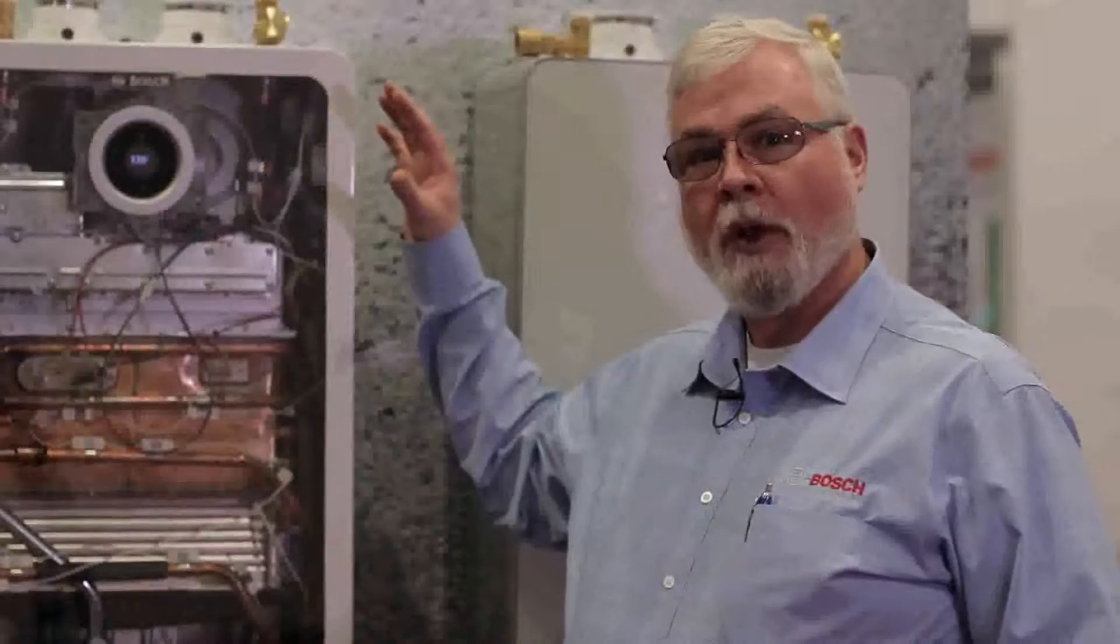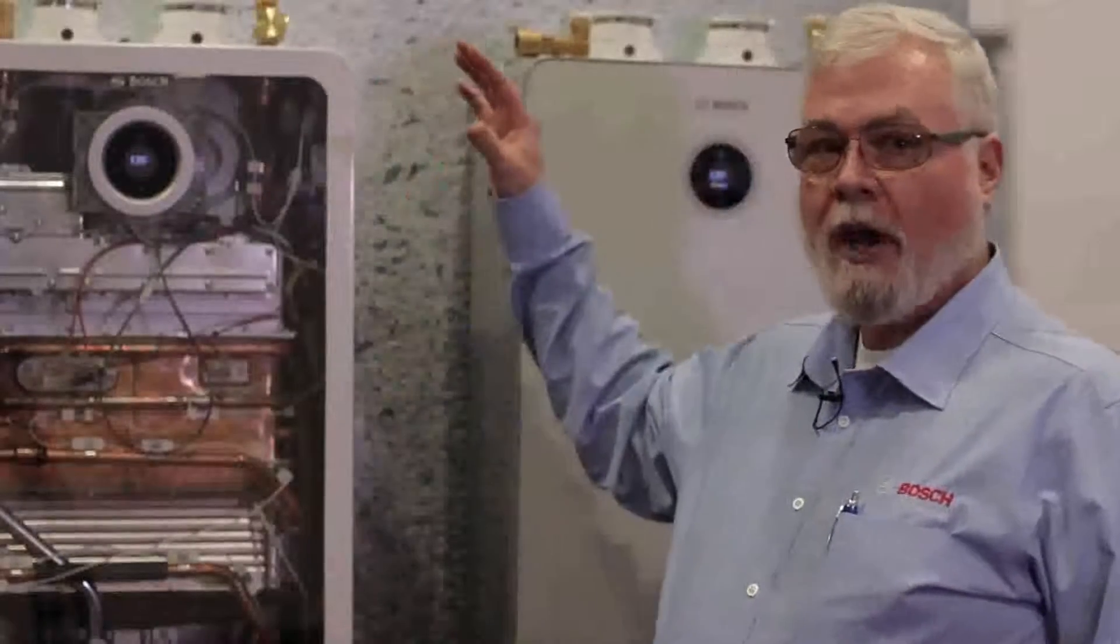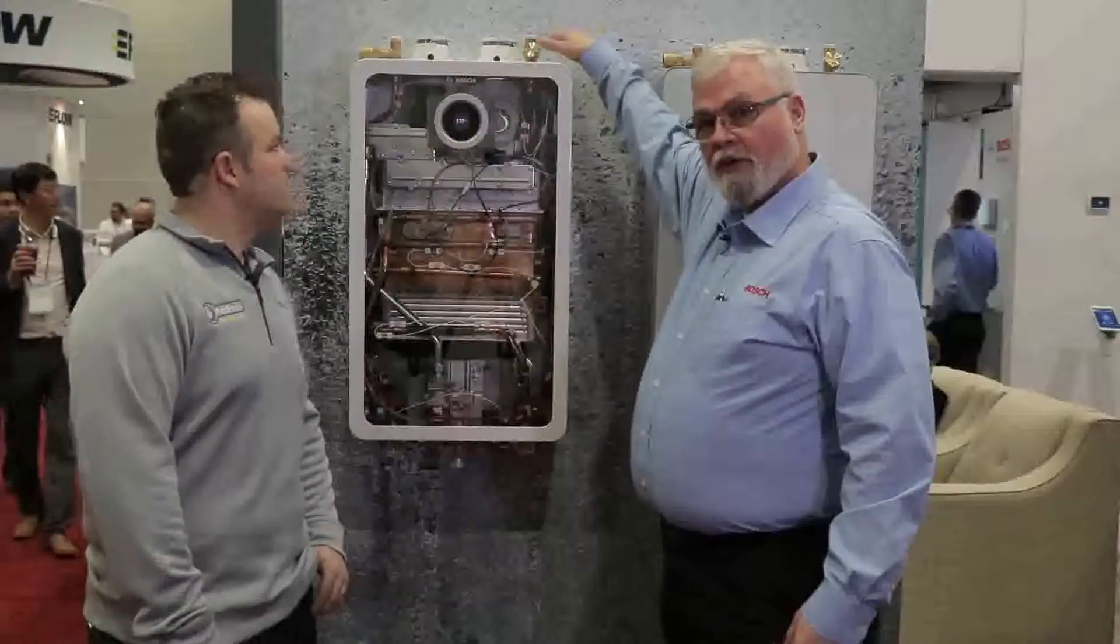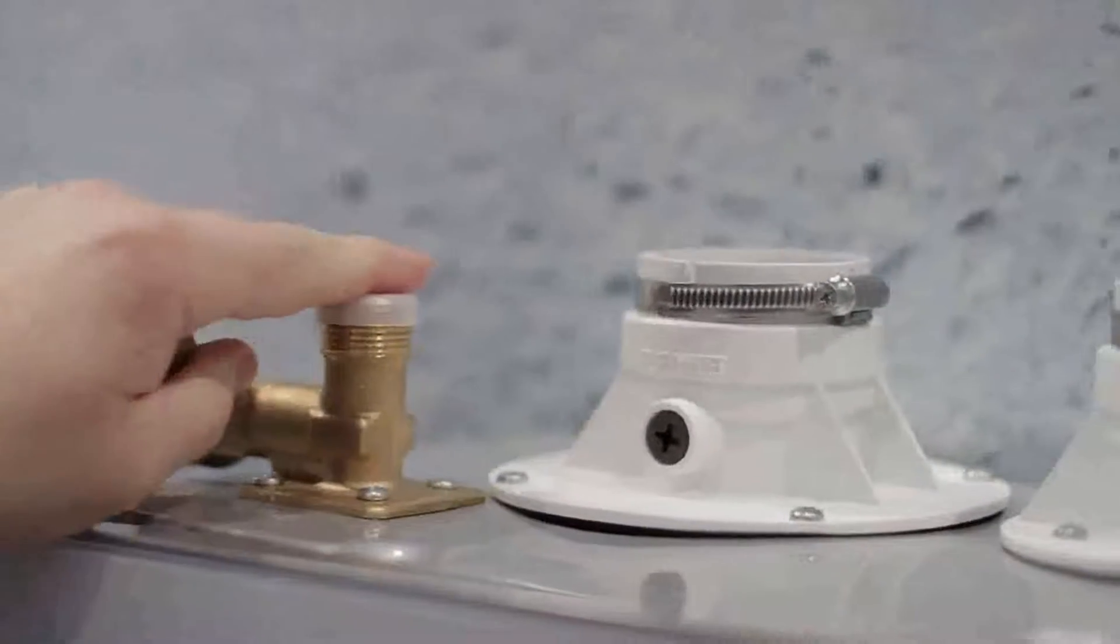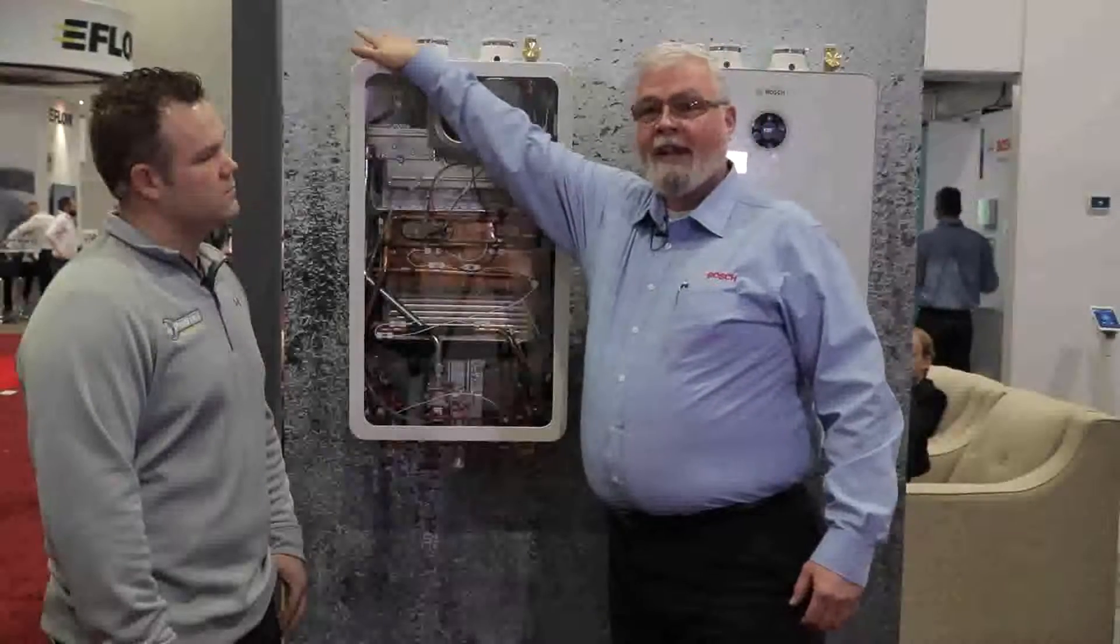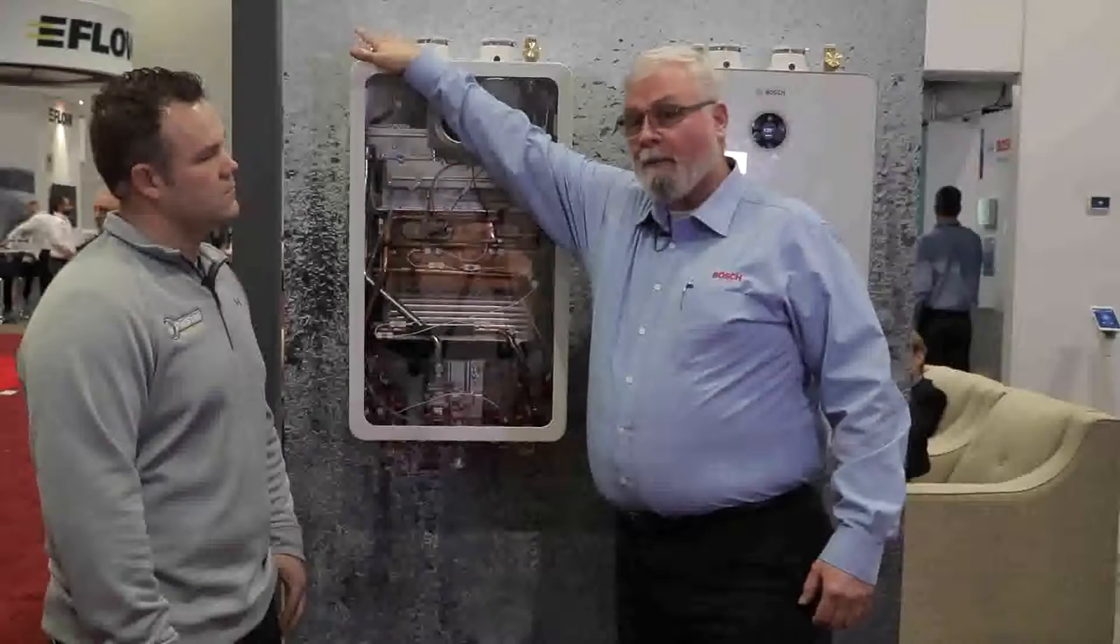What we're trying to do is create invisible comfort for the homeowner and a much easier install for the contractor. Easier install based on the fact that all of our water connections are on the top now. So we have our inlet water here on the top, our hot water coming out. Built into the hot water outlet side is the relief valve port on the outlet side.